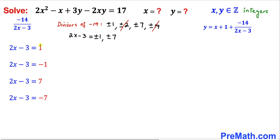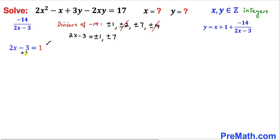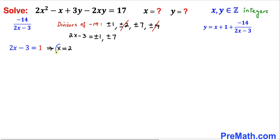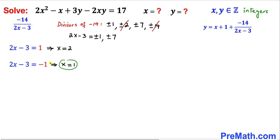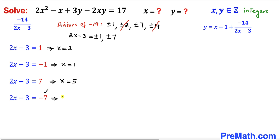So 2x minus 3 can take values 1, negative 1, 7, and negative 7. Solving each: for 2x minus 3 equals 1, adding 3 gives 2x equals 4, so x equals 2. For 2x minus 3 equals negative 1, we get x equals 1. For 2x minus 3 equals 7, we get x equals 5. And for 2x minus 3 equals negative 7, we get x equals negative 2.